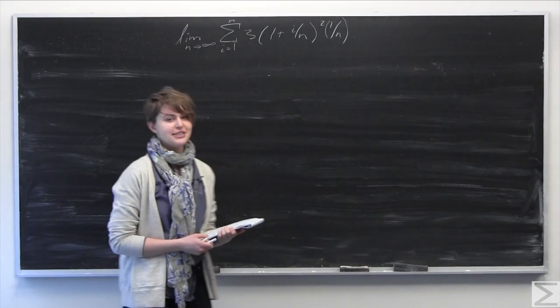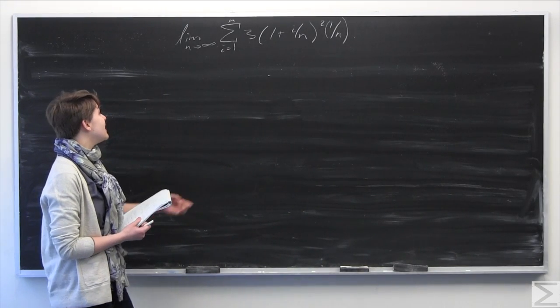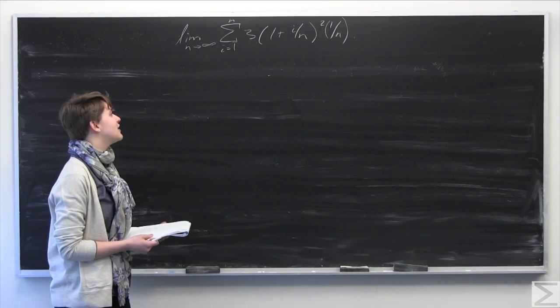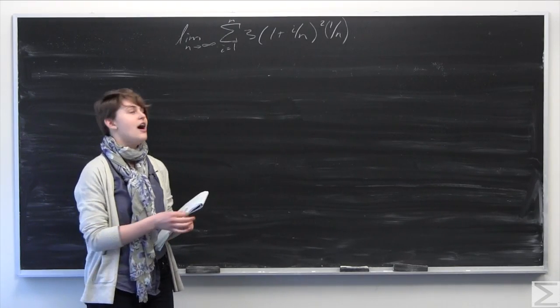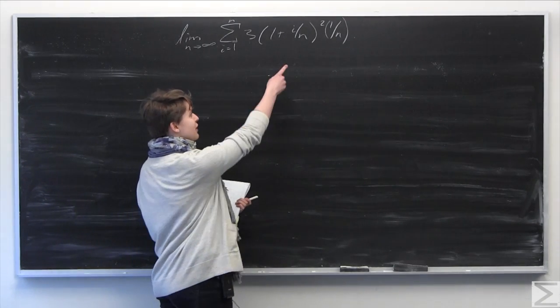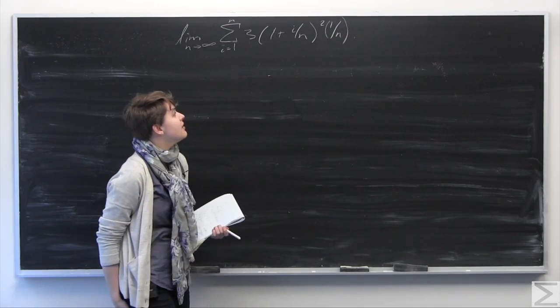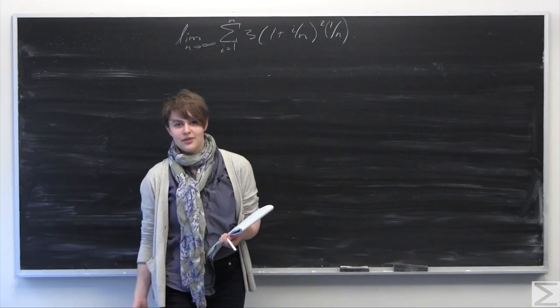This week's problem of the week asks you to evaluate the limit as n goes to infinity of the sum from i equals 1 to n of 3 times the quantity (1 plus i over n), all squared, times the quantity 1 over n.